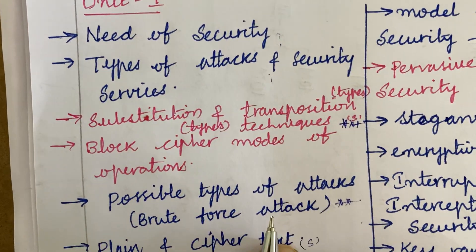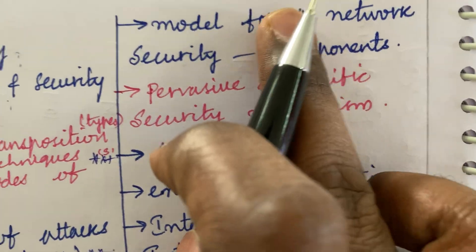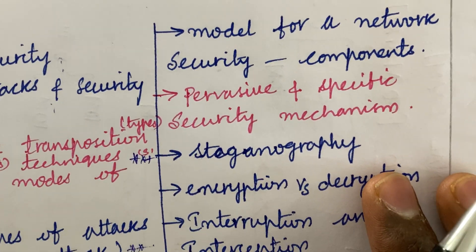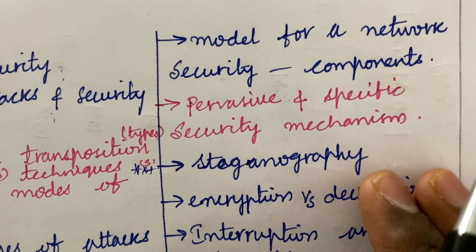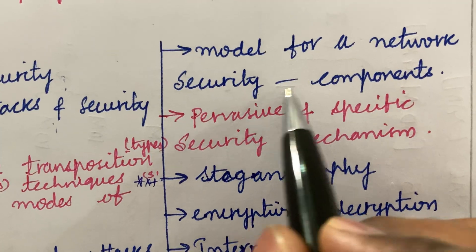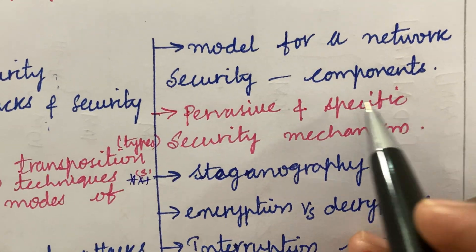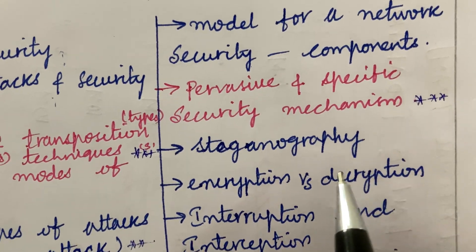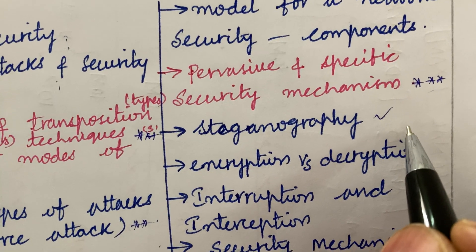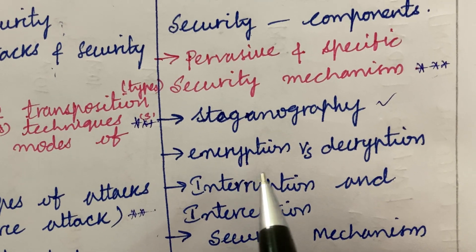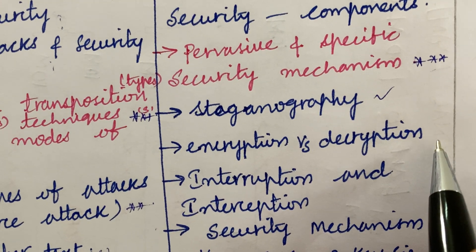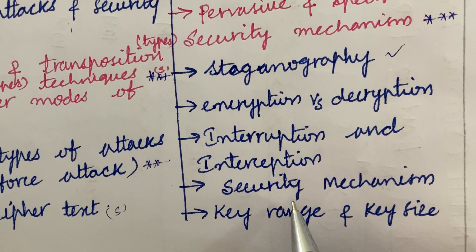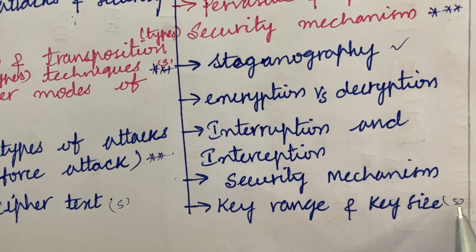From this part we can expect 2A as well as 3A questions. The first question is all about short questions from A to J. The model for network security and its components, as well as pervasive and specific security mechanisms, are said to be very important questions. Steganography — what is steganography, explain — may be a 2-mark question. Encryption versus decryption may also be a 2 or 3-mark question. Interruption and interception differences, security mechanism, key range, and key size may also be short questions.